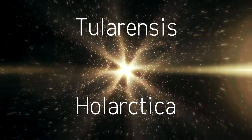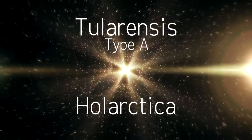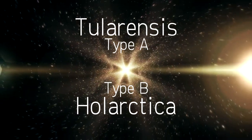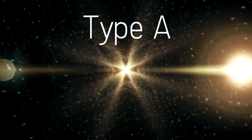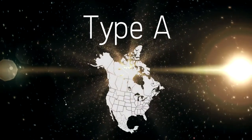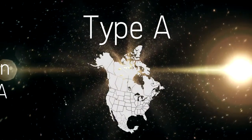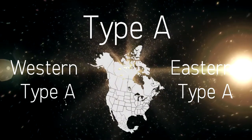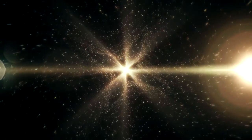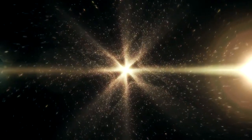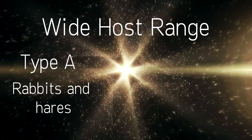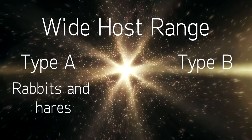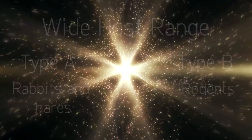Two subspecies, tularensis and holarctica, classified as type A and type B, most commonly cause disease in mammals. Type A is only found in North America and has two subtypes endemic to the eastern and western halves of the country. The organism has a wide host range, with type A more common in rabbits and hares, while type B is more often found in rodents.